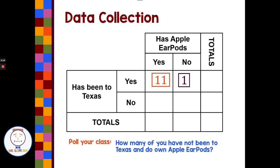Next we survey: how many of you have not been to Texas but do own Apple EarPods? That's no to Texas, yes to EarPods — six people raised their hand, so we put six there. Our last question: how many have not been to Texas and do not own Apple EarPods? We have three students for that. So this is our data collection and where we found our joint frequencies, joining Apple EarPods with Texas. This is the body of our two-way table.